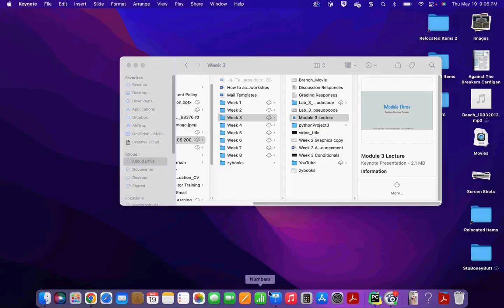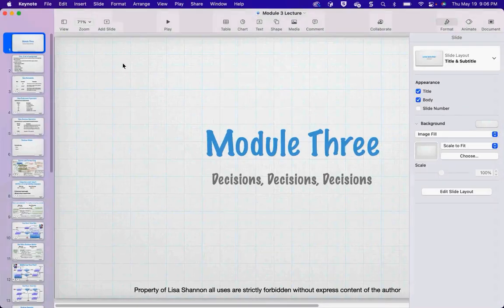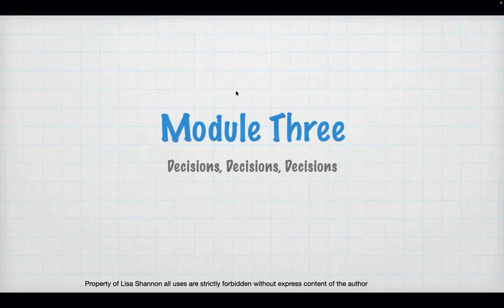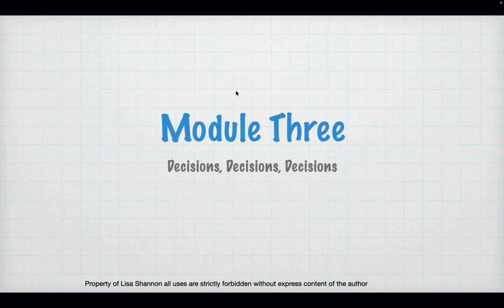Tonight we are talking about decision making. We think we know what it is as human beings, and we do for us, but for computers we don't. We have to learn how to think about making a decision and how to communicate that to the computer, because the computer doesn't know what we know — it has no concept that the sky is blue or that it's dark outside. The computer knows nothing; we have to teach it.